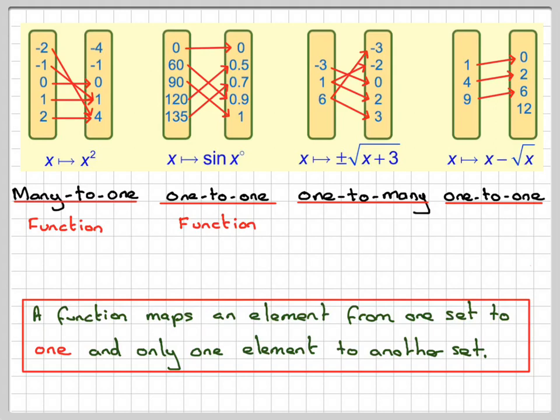Now, if we look at this one here closely, 6 is mapped onto two different things: minus 3 and 3. Therefore, it does not fulfill that definition of a function. So this is not a function. It's called a one-to-many relation.